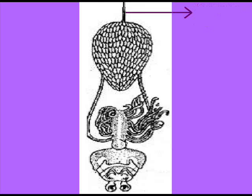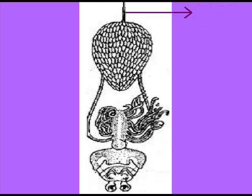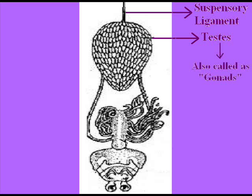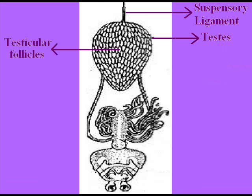The first part is the testicular follicles, attached with a structure called the suspensory ligament, which attaches the testicular follicles to the body wall. In the testes, a large number of testicular follicles are present. The testes are also called the gonads, and these testicular follicles are present in large number.